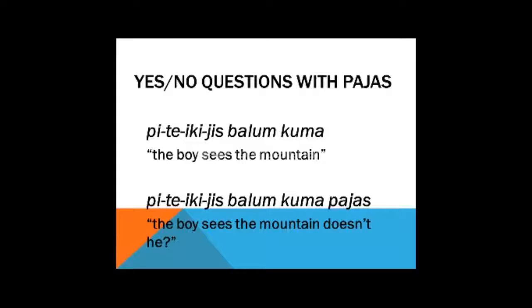Now the second one, paias. Again, the statement: pita yika yisbalum kuma, the boy sees the mountain. Equivalent question — I'm going to stick paias on the end: pita yika yisbalum kuma paias. This could be translated as: Does the boy see the mountain? It's a yes-no question. But when you're using paias, you're suspecting that the boy does see the mountain, so it's better translated as something like: The boy sees the mountain, doesn't he?